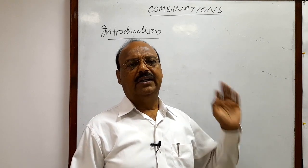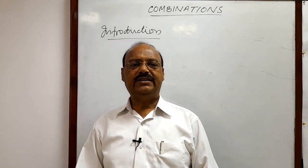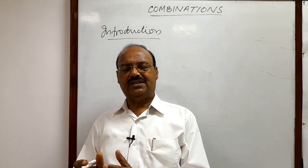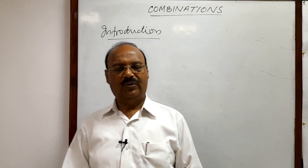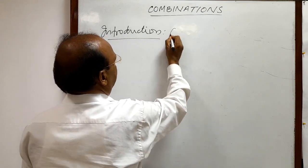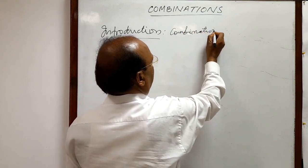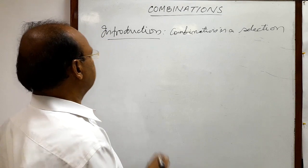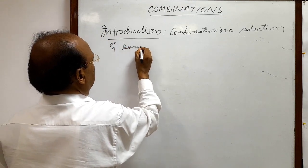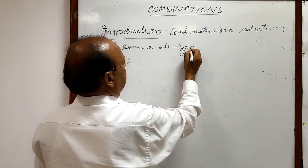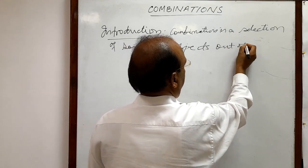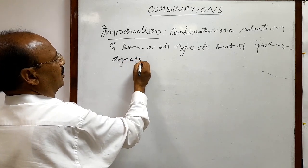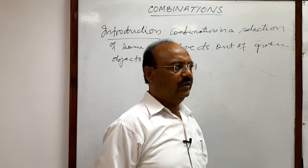Let us start with the introduction of combinations. Combination is a selection — or collection — of some or all objects out of given objects. Simply put, combination is just selection, nothing else.